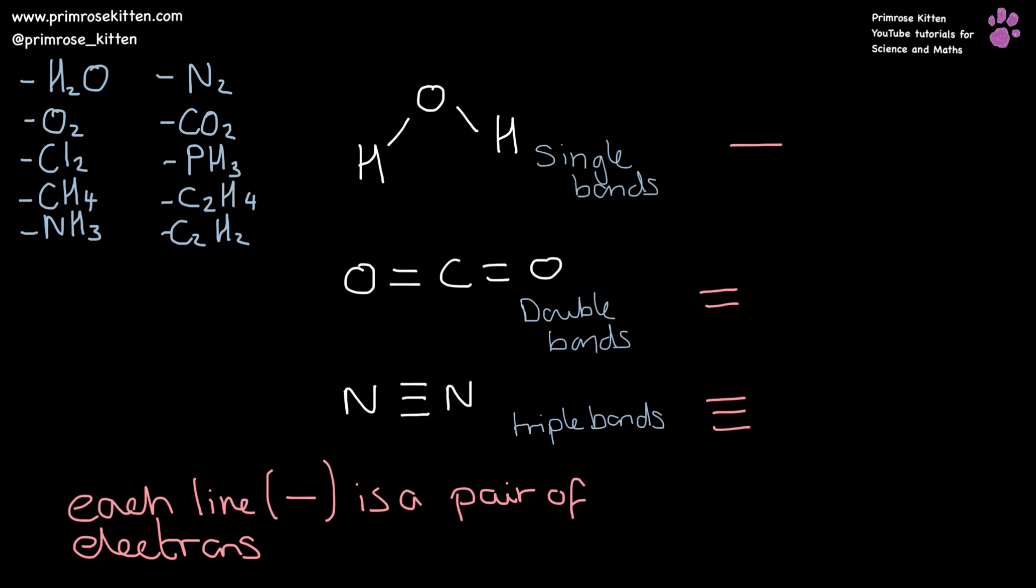You may be familiar with drawing covalent compounds as like stick figures where we have this line or a double bond or a triple bond. What is really important to remember that each bond represents two electrons, one from one compound and one from another compound. So a single line is two electrons. A double line is going to be four electrons. And then a triple line is going to be six electrons.